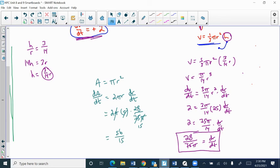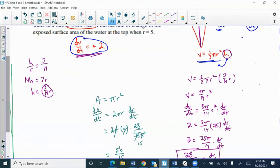So this is the rate that the area is changing. It's going to be represented by centimeters squared per second.